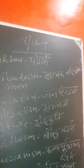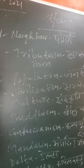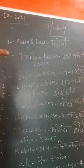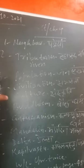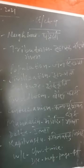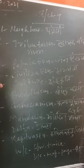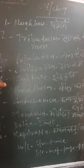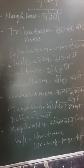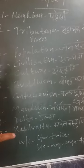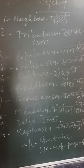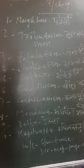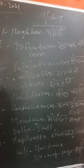Tibet — reverse. Population — Jansankhya. Civilization — Sabhyata. Culture — Sanskriti. Buddhism — Baudharm. Confucianism — Confucian dharm. Mandarin — Mandarin Bhasha. Delta — Kapil Vastu. All these words are important; everyone should write and learn them properly.